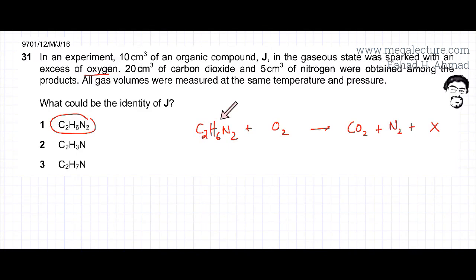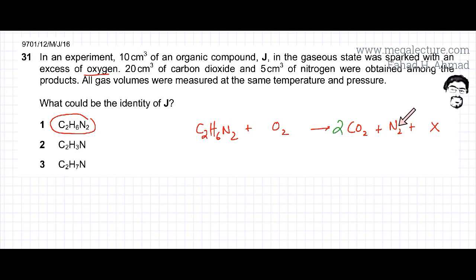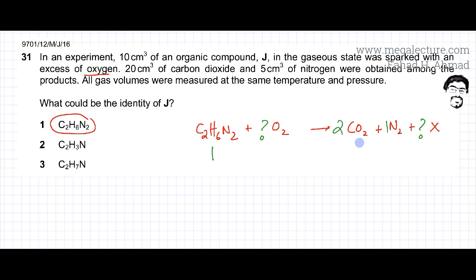If I try to balance this incomplete equation, I can balance some parts. There are two carbons, so there should be two carbon dioxide molecules. There are two nitrogens, so there should be one N₂ molecule. I cannot figure out the amount of O₂ because I don't know what compound X containing hydrogen is produced.